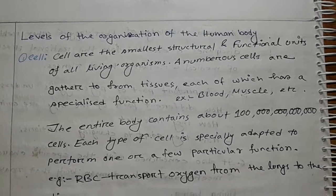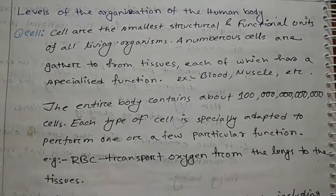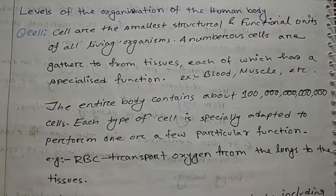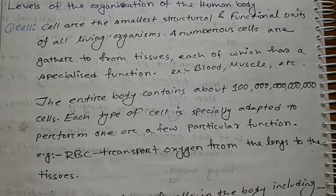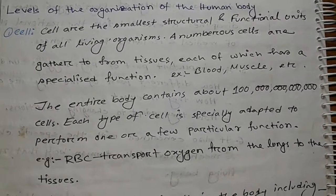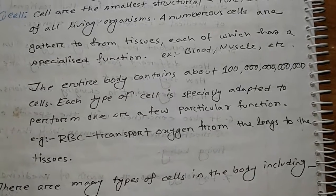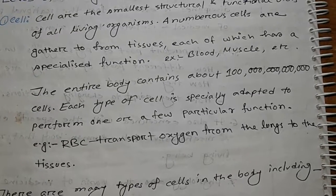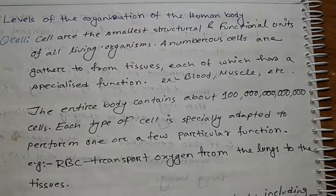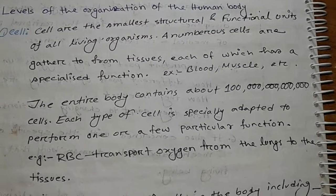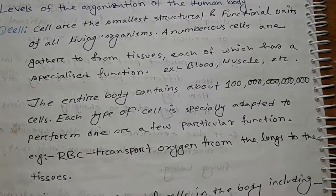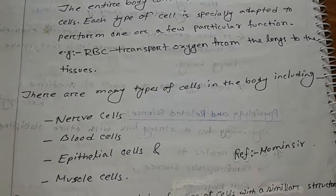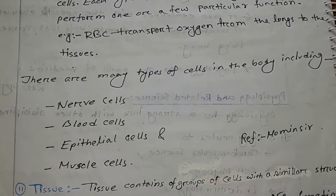Levels of organization of the human body. 1. Cell. Cells are the smallest structural and functional units of all living organisms. A number of cells are gathered to form tissues. Each tissue has a specialist function, e.g., blood, muscle, etc. The entire body contains above 100 trillion cells, each type specifically adapted to perform one or a few particular functions. For example, RBCs transport oxygen from the lungs to the tissues. There are many types of cells including nerve cells, blood cells, epithelial cells, and muscle cells.